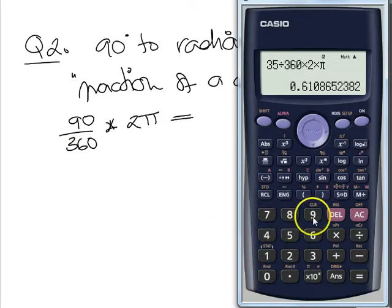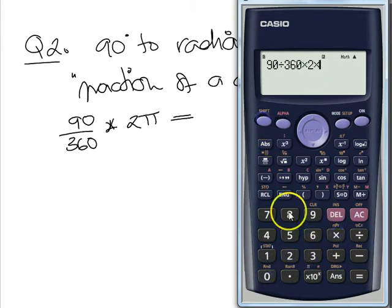Let's just tap in the calculator, shall we? 90 divided by 360 times by 2 times by π equals π over 2, which is 1.57.